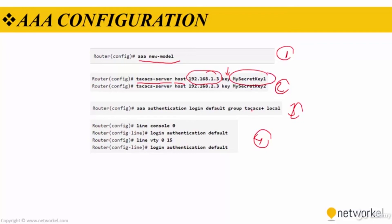In the third step, we use the 'aaa authentication login' command, which identifies the information to be used for login. The 'default' word represents the list name. The remaining commands are authentication methods. 'Group tacacs+' means using all configured TACACS+ servers. We also have the 'local' keyword, which defines a second authentication mechanism. If the authentication servers cannot be accessed, local usernames and passwords defined on the router can be used.